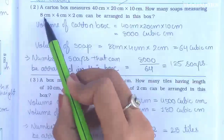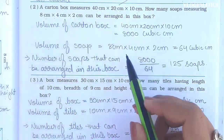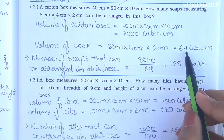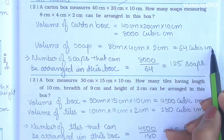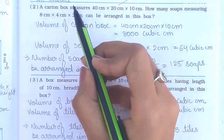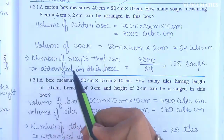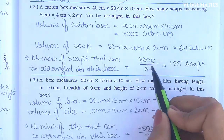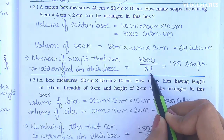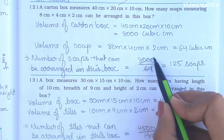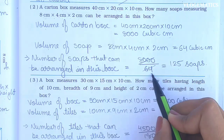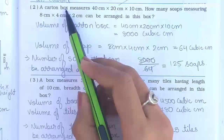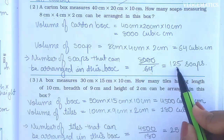Volume of soap = 8 cm × 4 cm × 2 cm. 8 × 4 = 32, 32 × 2 = 64. So soap volume is 64 cubic cm. Number of soaps that can be arranged = volume of carton ÷ volume of soap = 8000 ÷ 64 = 125. So 125 soaps can be arranged in the carton box.